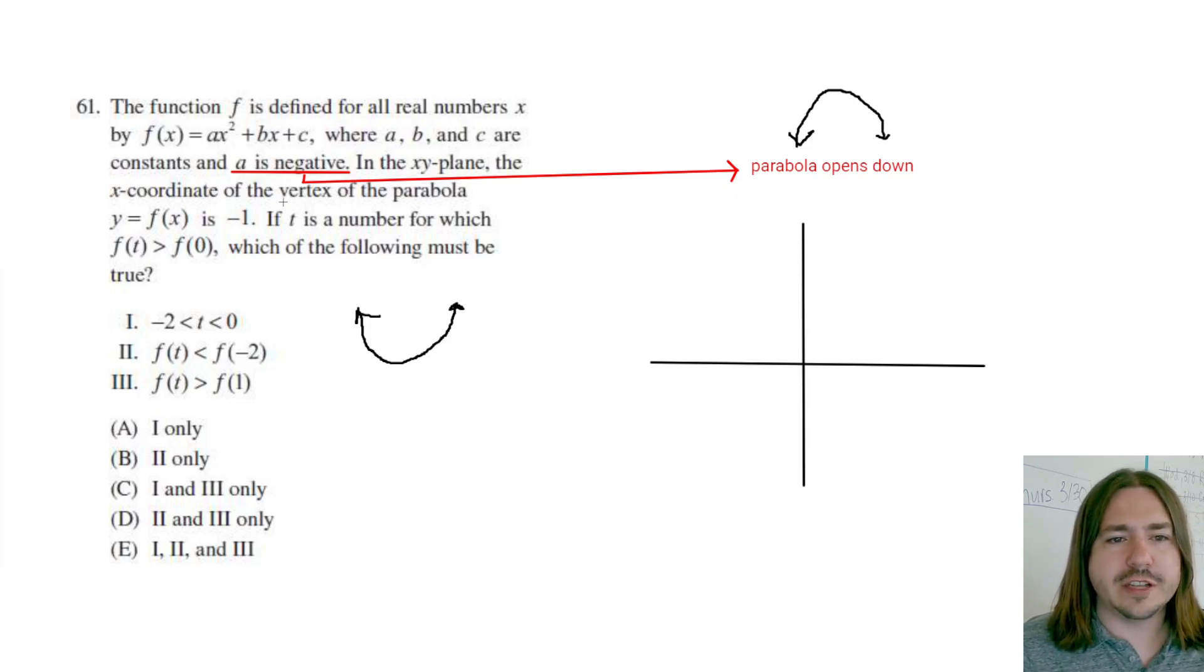So anyway, it says the vertex of the parabola is, or the x-coordinate of the vertex, rather, is negative 1. So what do we mean by that? The vertex is going to be this point that's either the highest point, if we're talking about a parabola that opens downward. I'm trying to draw a little circle here so you can kind of see the point I'm talking about. So this little maximum value up here. Or if it's opening up, it's the minimum value.